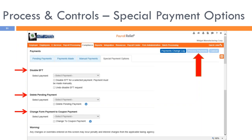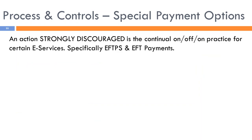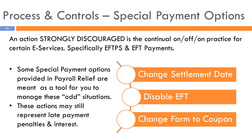Checking a box at each option simply confirms that you want to carry out that action. When done, click the 'process payments' button for the system to actually perform the tasks. Regarding enabling and disabling e-services — especially EFTPS and EFT payments — the special payment options in Payroll Relief are meant as tools for managing odd situations. If a client has a continual cash flow problem, they should not be placed on electronic services. Changing a settlement date may still result in late payment penalties, but at least the payment will not be overlooked.